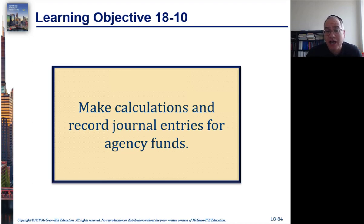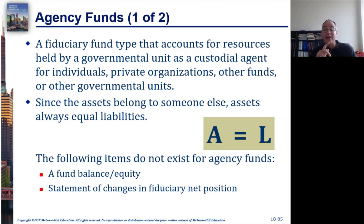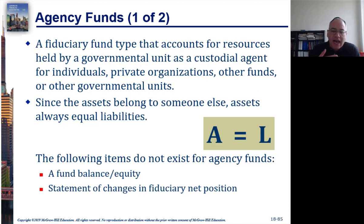Learning Objective 18-10: make calculations and record journal entries for agency funds. An agency fund is a fiduciary fund type that accounts for resources held by the government unit as a custodial agent — kind of like a trust relationship — for individuals, private organizations, and other funds. The assets always belong to someone else.